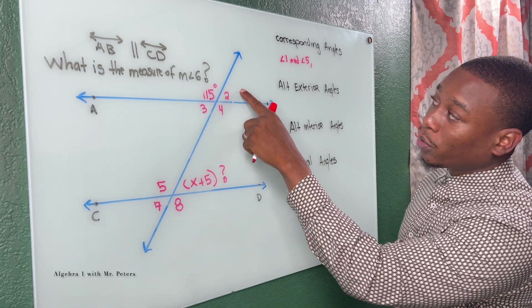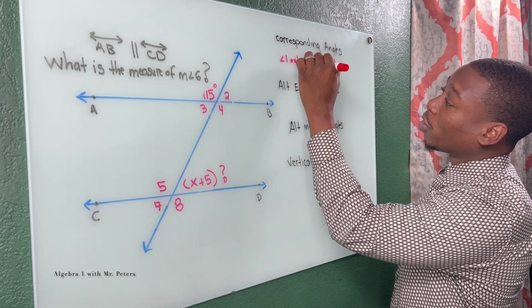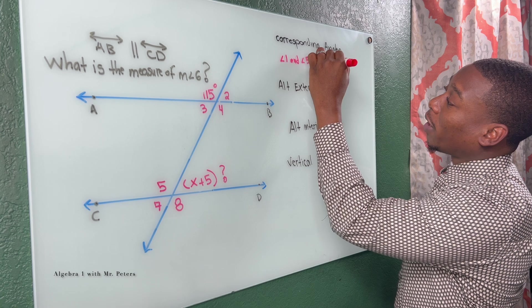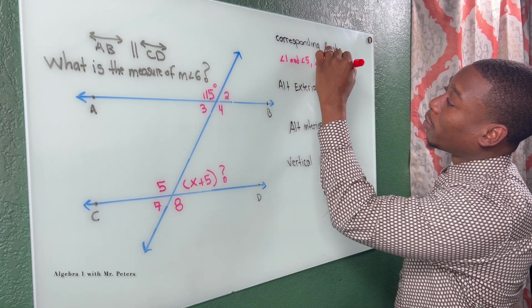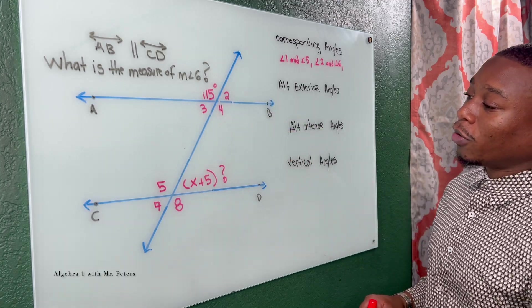Now let's say if I go to angle two, angle two and angle six, these are also corresponding angles. They're in the top right. So we got two of our corresponding angles so far.